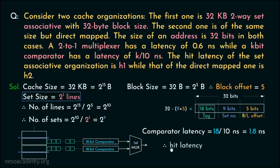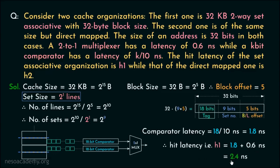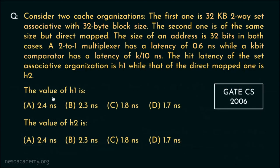The hit latency H1 is the comparator latency of 1.8 nanoseconds plus the 2-to-1 multiplexer latency of 0.6 nanoseconds, giving H1 = 2.4 nanoseconds. So the value of H1 is option A: 2.4 nanoseconds.